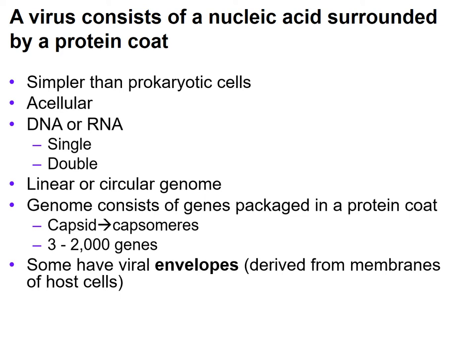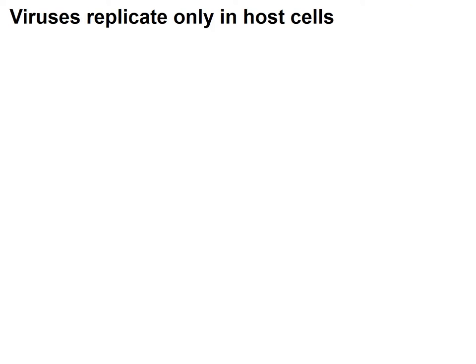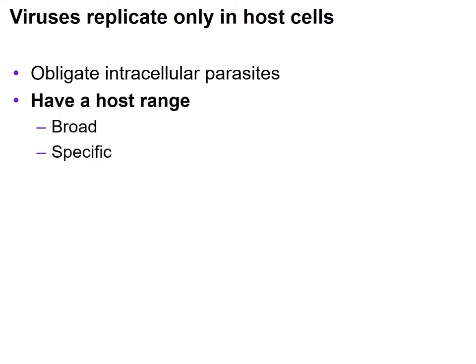Some viruses have a viral envelope. A viral envelope is a lipid-type structure and it's often derived from the membranes of the host cells. Viruses replicate only in host cells — that's the only way they can replicate — so they're considered obligate intracellular parasites. They do have a host range, which is the range of different species that they can infect.